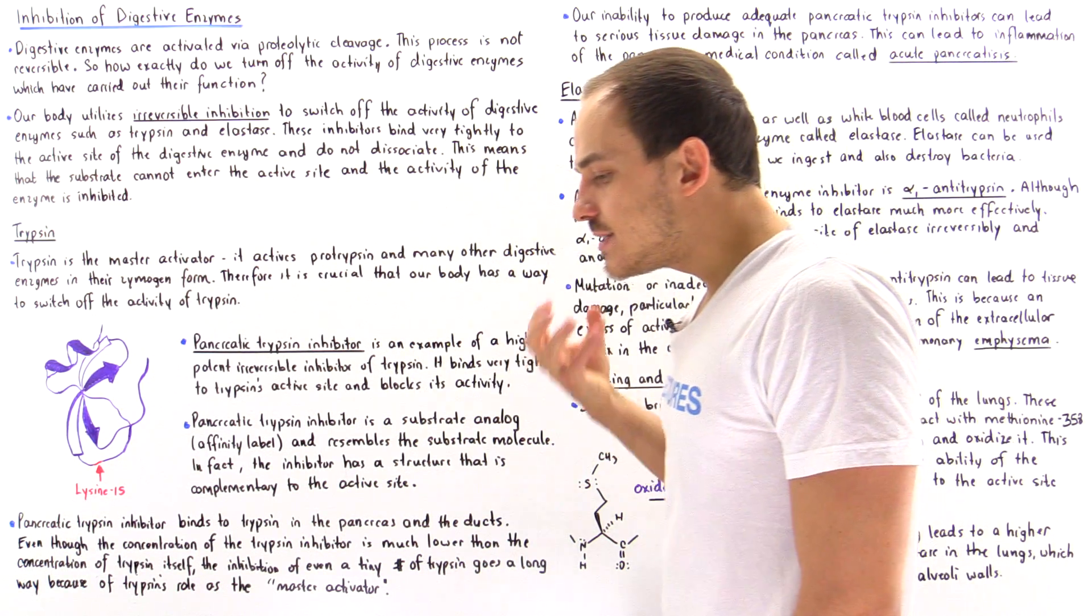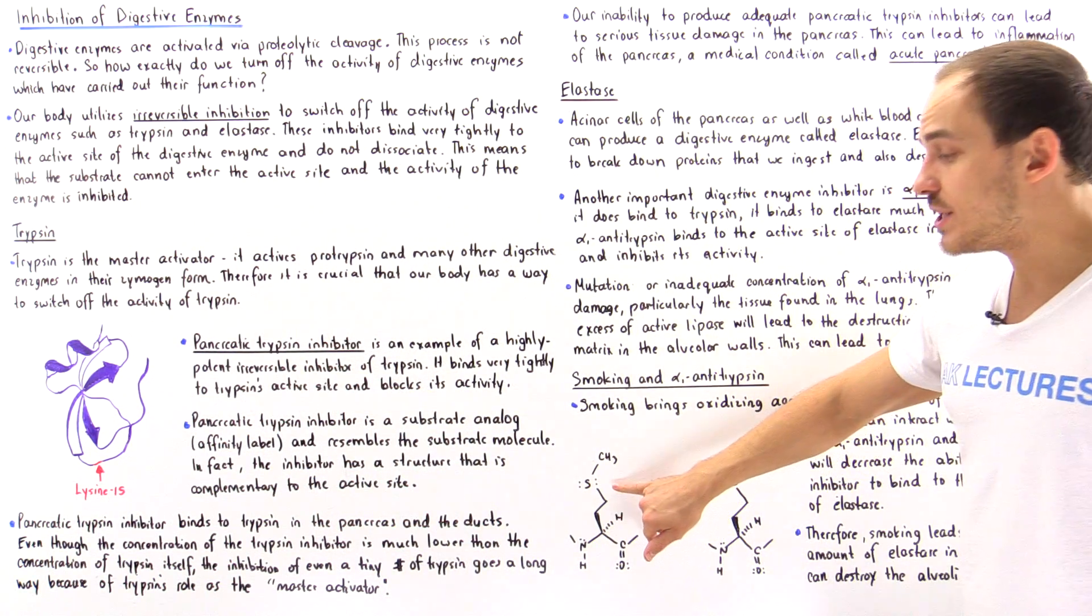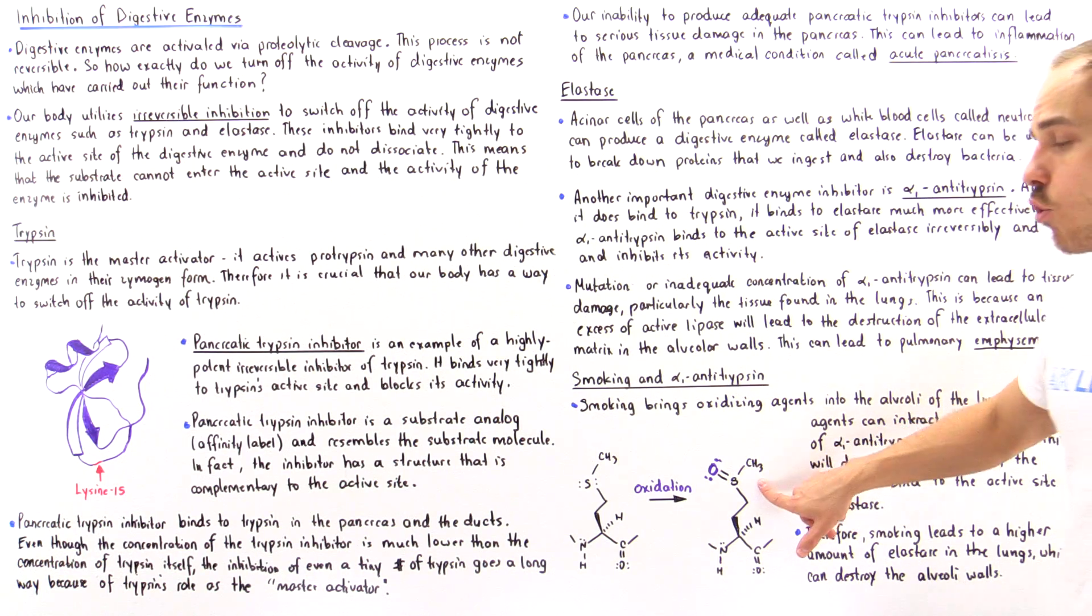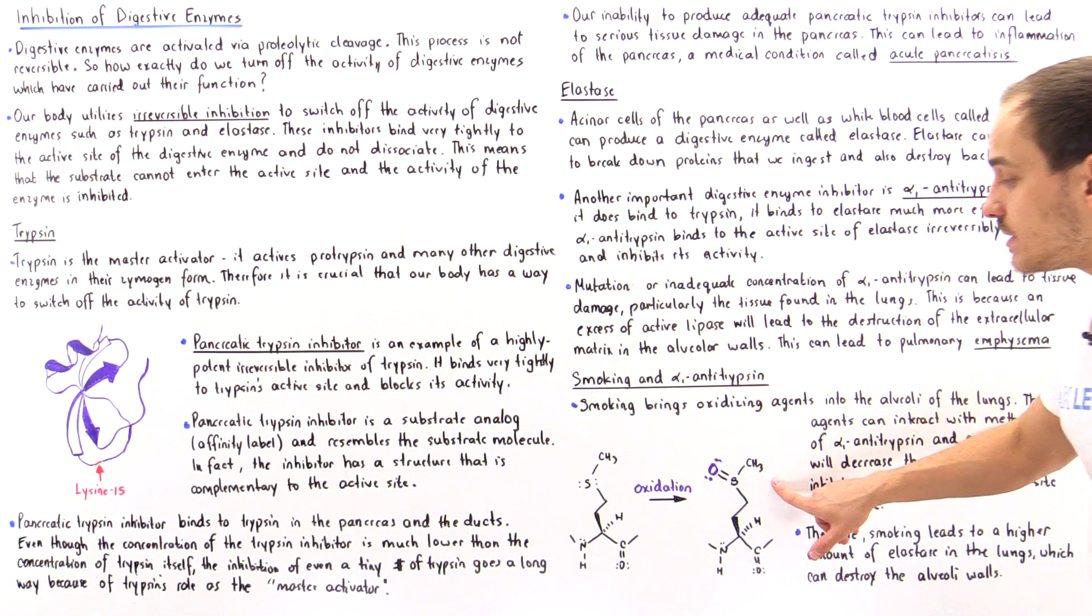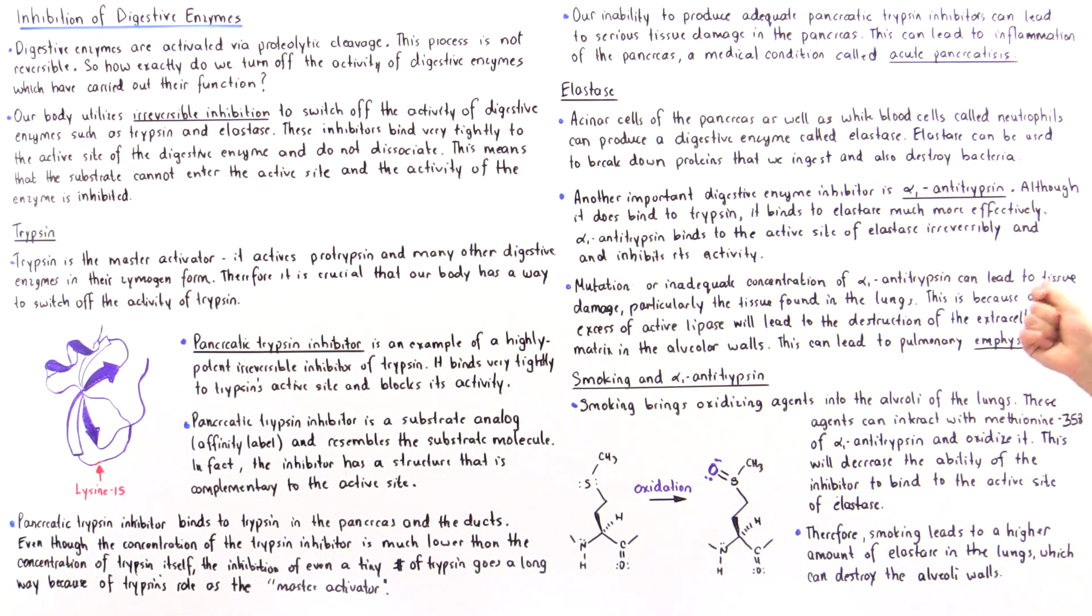Now if these oxidizing agents as a result of smoking basically interact with this side chain group they essentially will oxidize it to form the following product. And this sulfonated product isn't able to actually interact with the active side of the elastase very well.